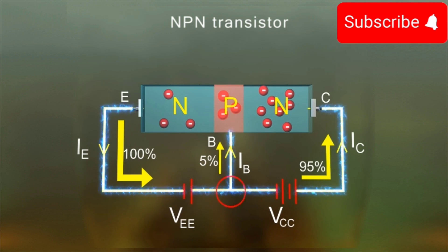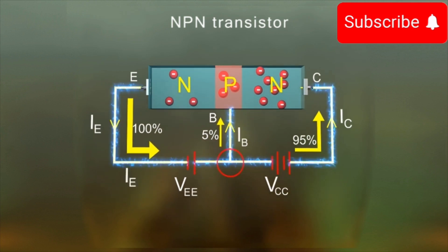At the junction point, Kirchhoff's first rule gives IE equals IB plus IC.